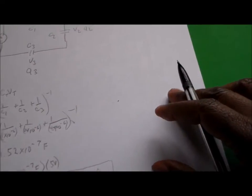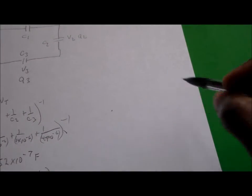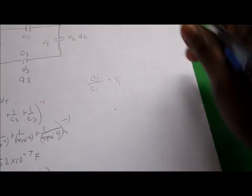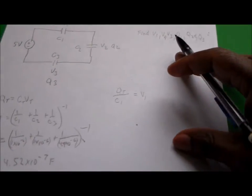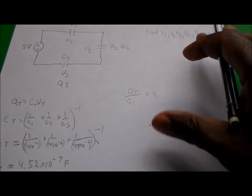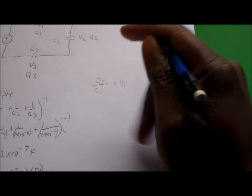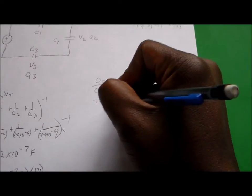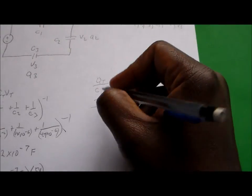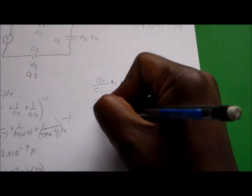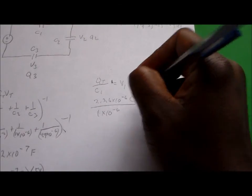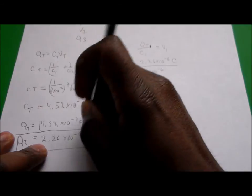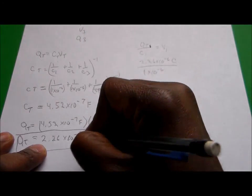Now we found the charge for all three. We also want to find the voltages. If we take the total charge and divide by C1, we can find V1. Note that charge is in coulombs and capacitance is in farads — I should have mentioned that earlier. So this value is coulombs, not farads.